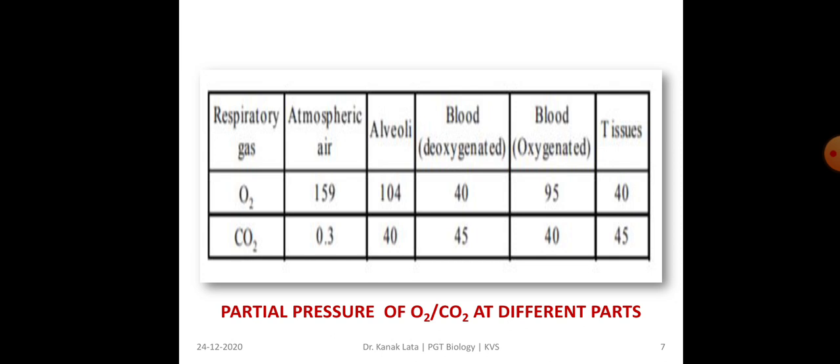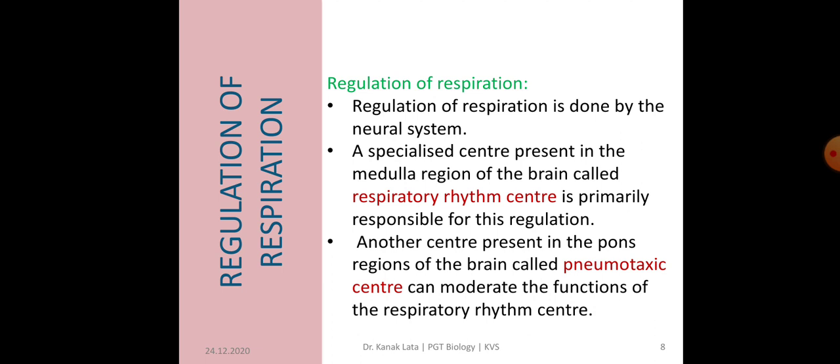This table depicts the partial pressure of oxygen and carbon dioxide at different parts. Respiration is under dual control, that is nervous and chemical. A specialized respiratory rhythm center is present in the medulla region of the brain, which is primarily responsible for regulation of respiration. There is also a pneumotaxic center present in the pons region of the brain that can moderate the function of respiratory rhythm center.